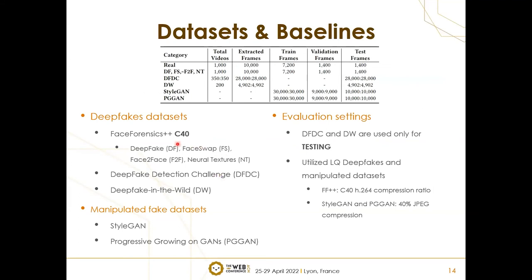We tried five different datasets. One includes real videos. We utilized deepfake, face swap, face-to-face, and neural textures from FaceForensics++, compressed at 40%. There is another dataset called the Deepfake Detection Challenge from Facebook. We also collected our own Deepfake in the Wild dataset from online. Additionally, we tried on fake image datasets — GAN-generated images including StyleGAN and PGGAN. For evaluation, we only trained with FaceForensics++ datasets, and used DFDC and Deepfake in the Wild only for testing. We compressed StyleGAN and PGGAN images with 40% JPEG compression to match the low-quality setting.